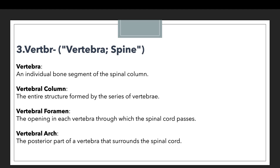The third example is vertebral foramen, which is the opening in each vertebra through which the spinal cord passes. The fourth example is vertebral arc, which is the posterior part of the vertebra that surrounds the spinal cord. If you walk through all these examples, you will find only one common thing among them: the spinal cord or spine — and that is why we use the prefix vertebra.